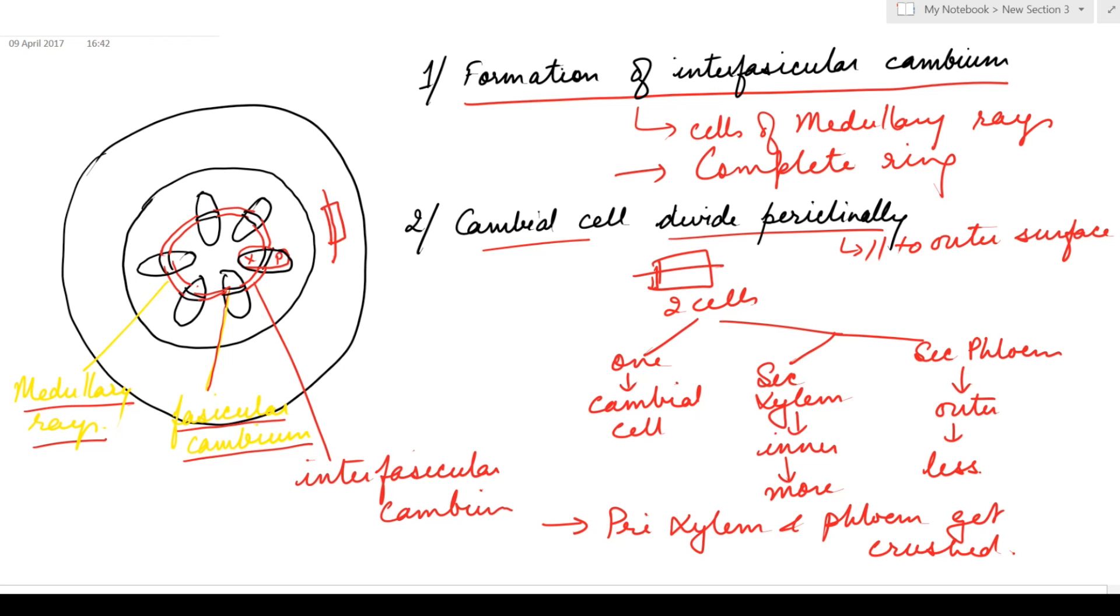Now due to the cambium activity, a pressure is applied on the overlying epidermis as the stem starts increasing in thickness and it ruptures.